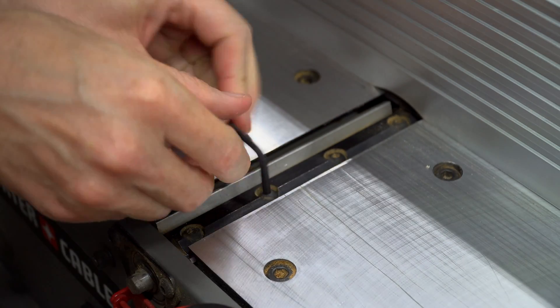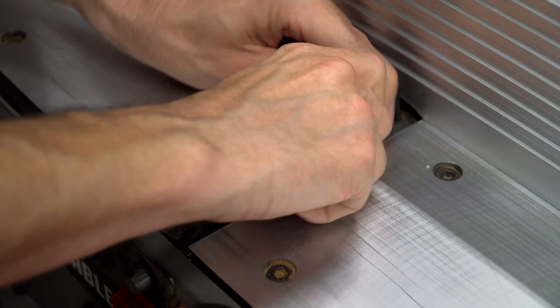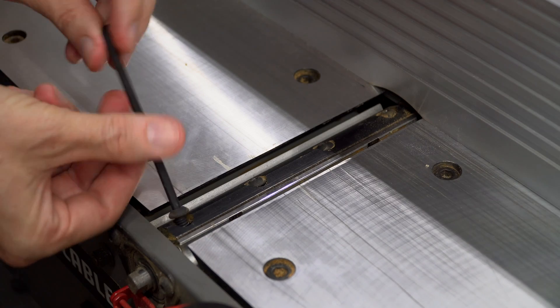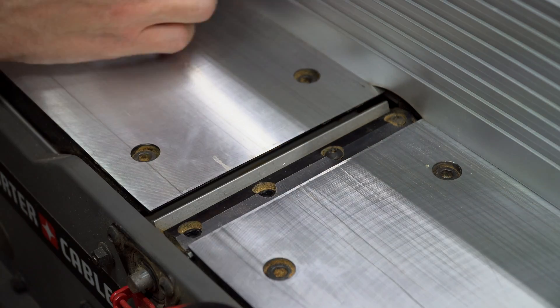Using the allen wrench that came with your jointer, loosen the blade screws. Now if you're only adjusting the blade, you can slightly loosen each screw. If you're removing the blade to sharpen or replace it, you'll need to completely remove each screw.